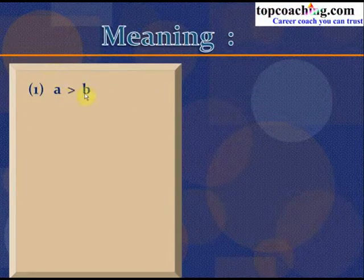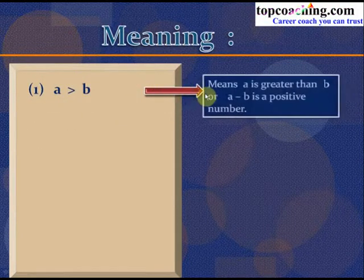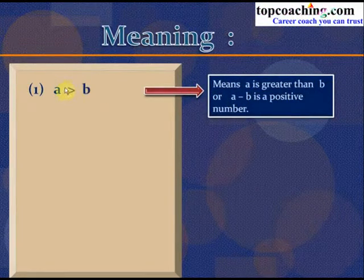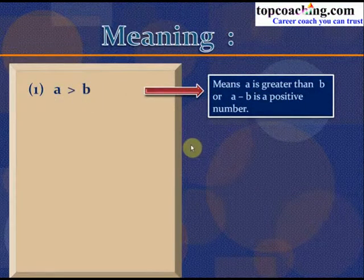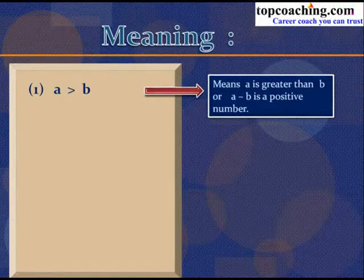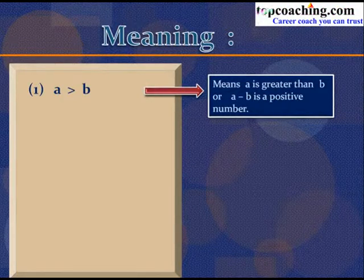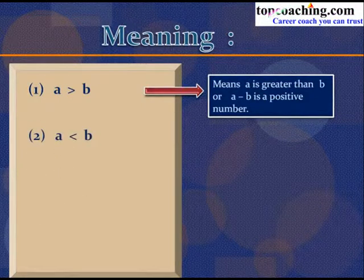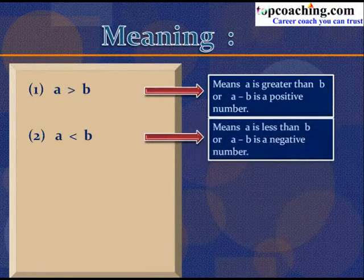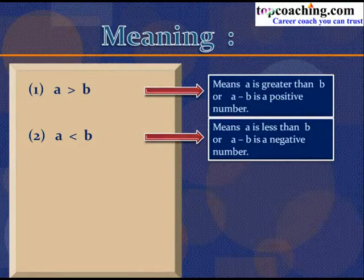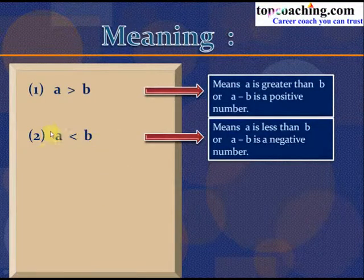A > B simply means that A is greater than B, and A minus B would be a positive number. Since A is greater than B, the number A minus B will always be positive. If you come across A < B, it means A is less than B and A minus B is a negative number, because the measure of A is less than B. So A < B means A minus B is negative, and A > B means A minus B is positive.